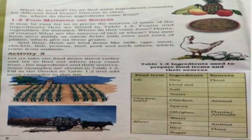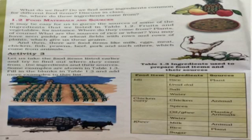By doing this activity, you find that some ingredients are common for different food items. For example, salt and spices are needed for all vegetables and curries. So some ingredients are common across different food items.